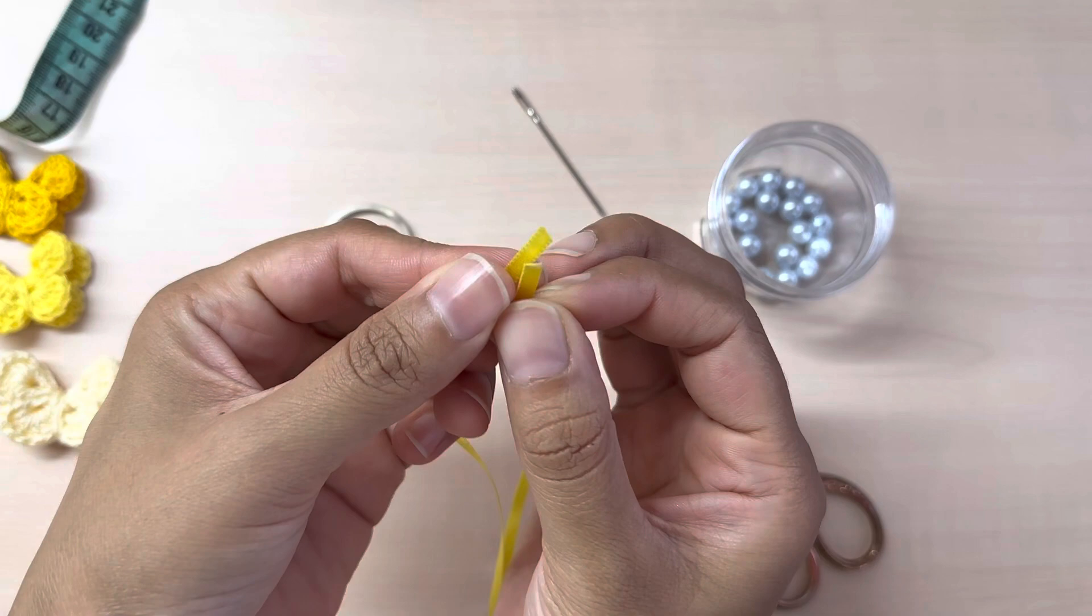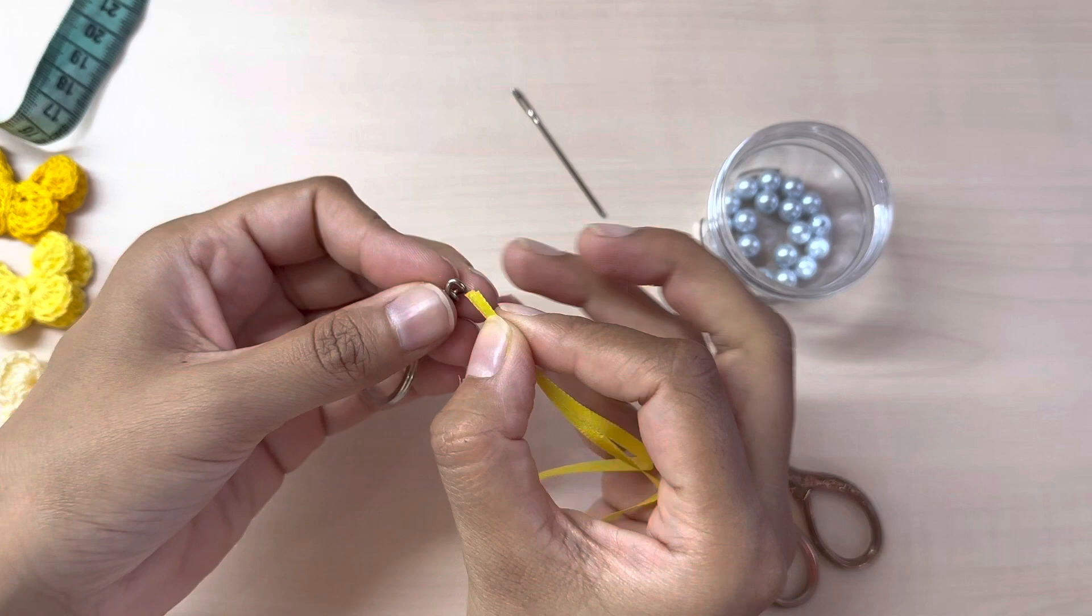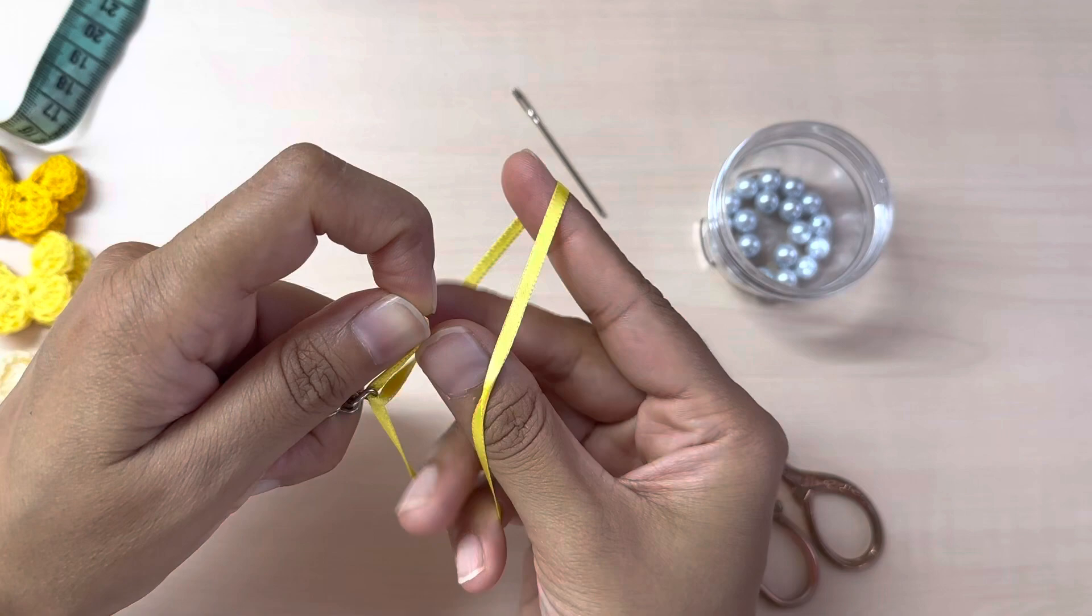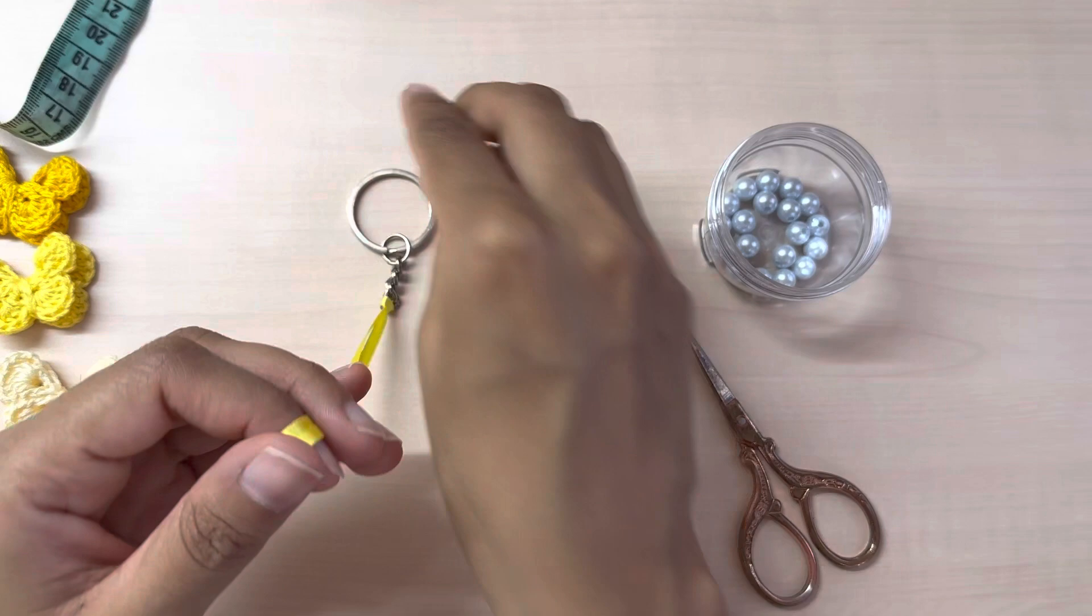Next, I'm going to fold my ribbon in half, and with the two open sides place it into the bottom chain of my key chain and just make a nice knot.